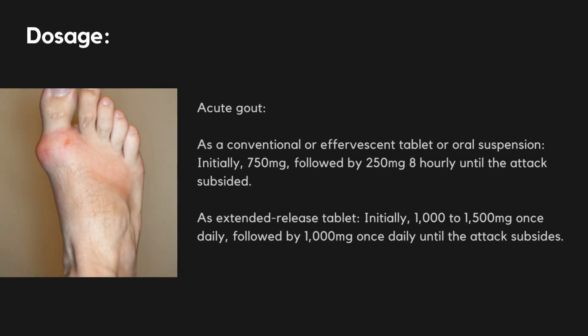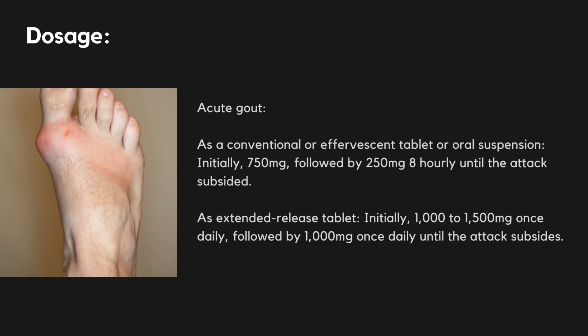Acute Gout: As a conventional or effervescent tablet or oral suspension, initially 750 mg followed by 250 mg every 8 hours until the attack subsides. As an extended-release tablet, initially 1000–1500 mg once daily, followed by 1000 mg once daily until the attack subsides.